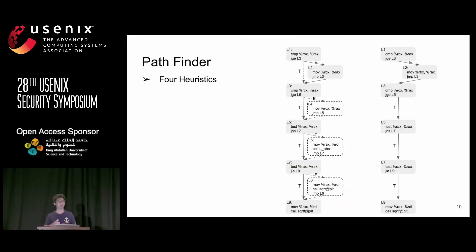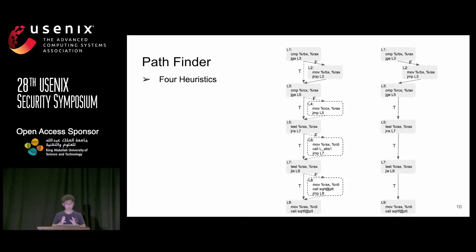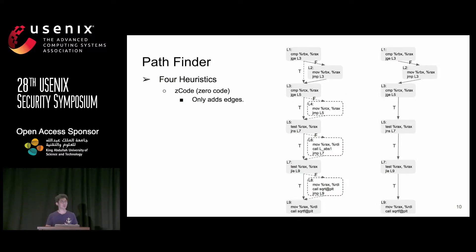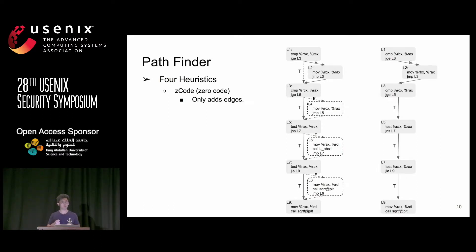After getting the executed code from the test cases, we need to infer more code because the test cases are not complete. We use four heuristics. In the figure, solid parts are executed code and dashed parts are unexecuted code. The first heuristic we call 'zero call' — on the inferred code path, we do not introduce extra calls, we only enable edges. For example, for a conditional jump in L1 where only the false branch is taken, if the target of the true branch is also reachable from L2, after applying this heuristic the edge between L1 and L3 is enabled.